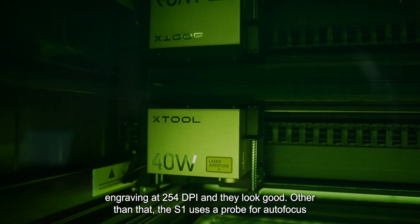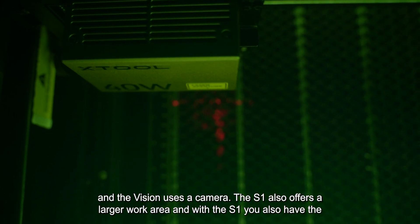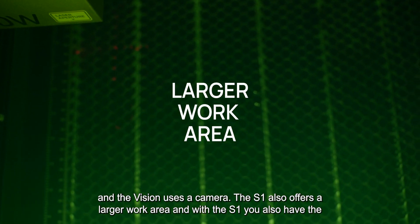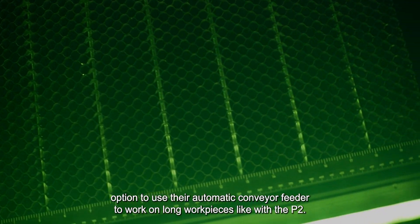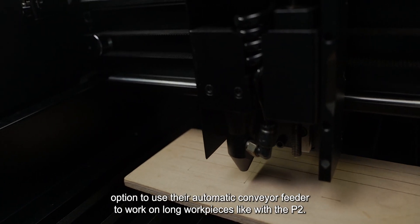But I would also say that I do almost all of my engraving at 254 dpi and they look good. Other than that, the S1 uses a probe for autofocus and the Vision uses a camera. The S1 also offers a larger work area and with the S1 you also have the option to use their automatic conveyor feeder to work on long work pieces like with the P2.